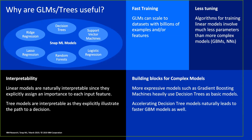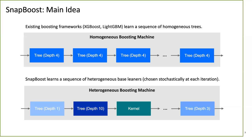Simpler models also serve as building blocks for ensemble models — most GBMs use decision trees underneath. By accelerating simpler models, you also accelerate GBMs. Simpler models are also easier to tune due to their linear nature. Regarding SnapBoost: unlike standard GBMs that learn sequences of homogeneous trees with fixed depth, SnapBoost dynamically adjusts tree depth per iteration based on features, yielding improved results.